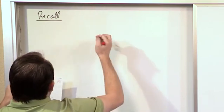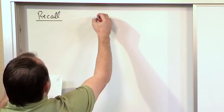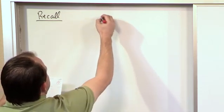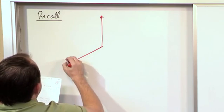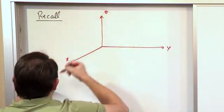Let's say here's the z direction, here's the x direction, and over this way is the y direction.